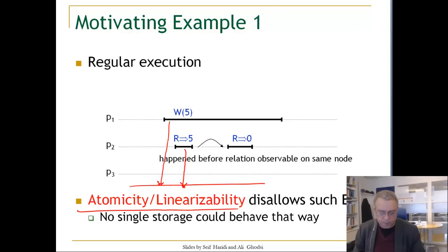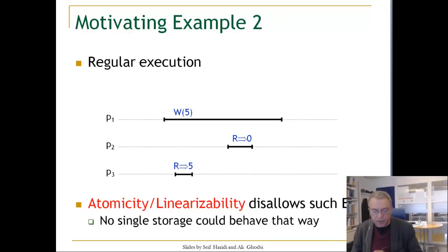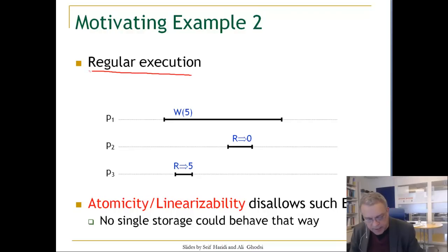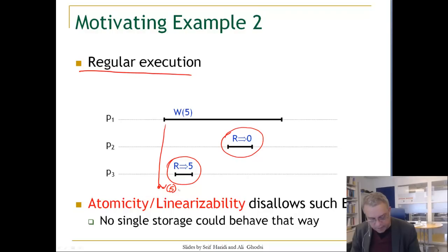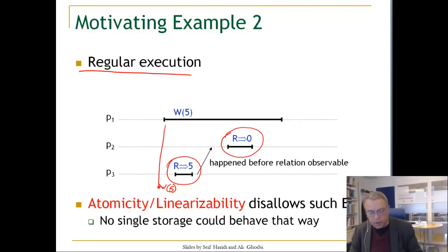We can see that linearizable executions obey the order of operations on the same process. Now let us look at a situation where we have operations performed on different processes. This is again not possible — this is a regular execution that is not an atomic or linearizable execution because this read happens after this read, and it is impossible to read the value zero because the last value written should be five. Linearizable executions observe order even if operations happen on different processes.